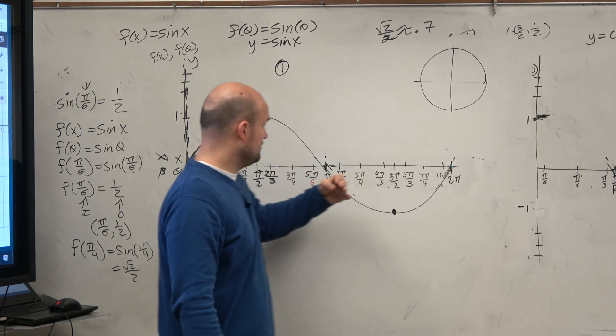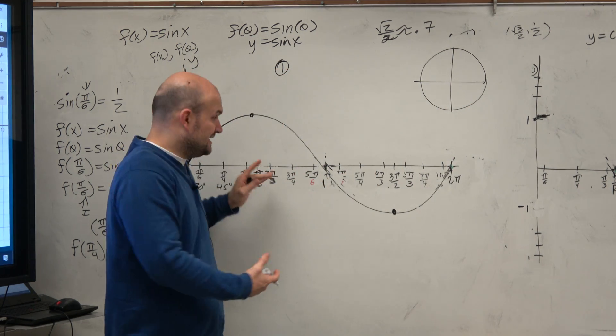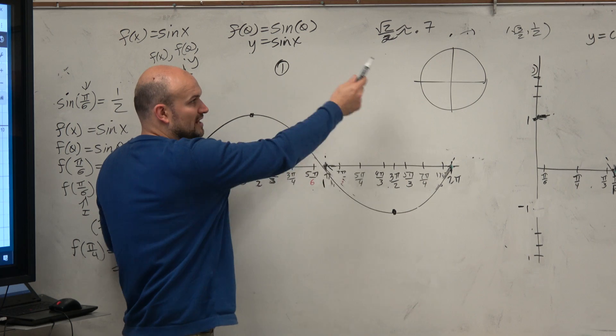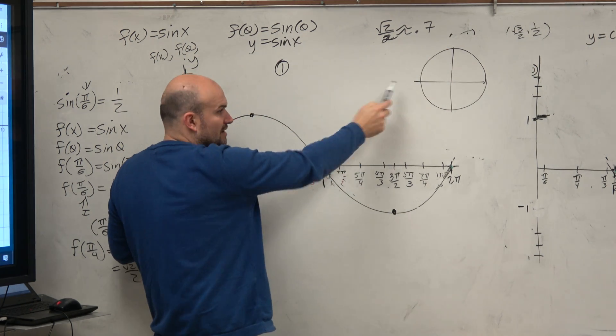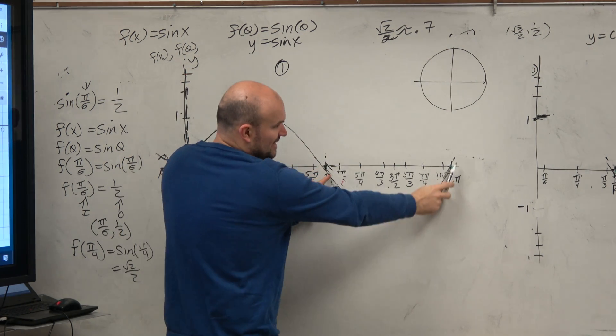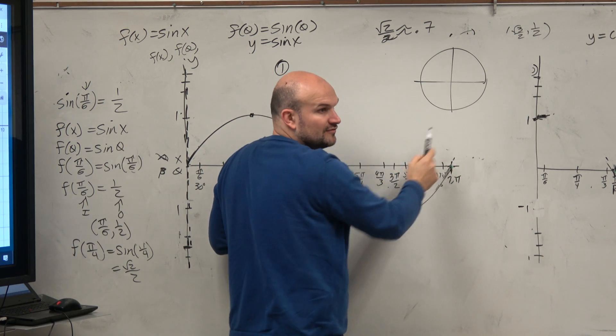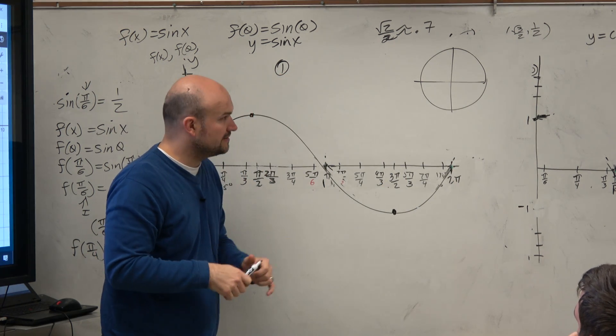And then the other thing that we want to talk about was understanding why these values were positive. Well, that's because it's the angles in the first and second quadrant. These are negative because it's angles in the third and the fourth quadrant. We conceptually understand that.